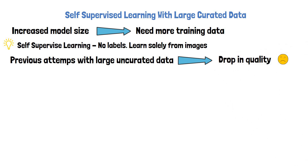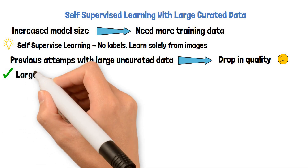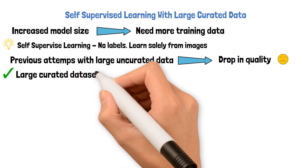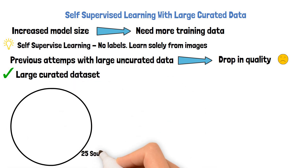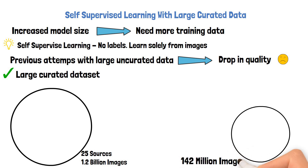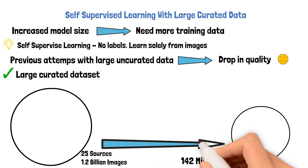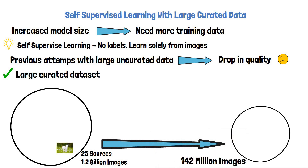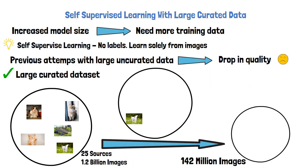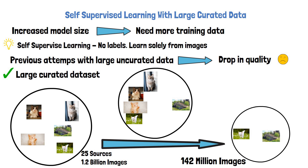With DynoV2, they built an automated pipeline to create a curated dataset, which helped them reach state-of-the-art results compared to other self-supervised learning models. They started with 25 sources of data combining 1.2 billion images, and extracted 142 million images from it. This pipeline has multiple filtering steps. For example, in the original uncurated dataset you are likely to find a lot of cat images and some other images, and training on such data as-is may lead to a model that is very good at understanding cats but may not generalize well to other domains. So one of the steps was to use clustering, which means grouping images based on similarities, then sampling a similar amount of images from each group to create a smaller but more diverse dataset.